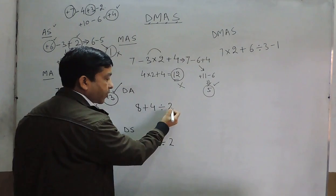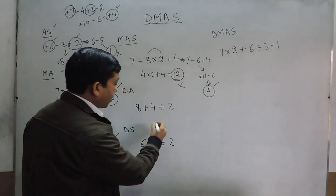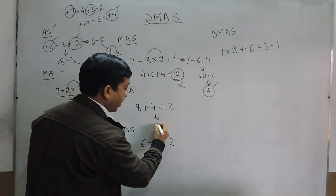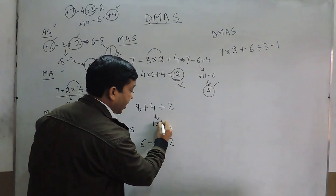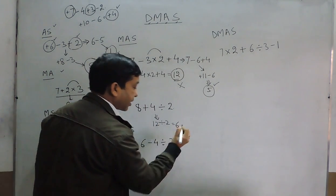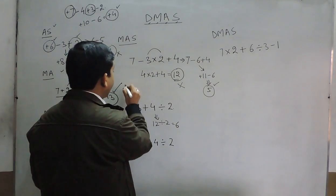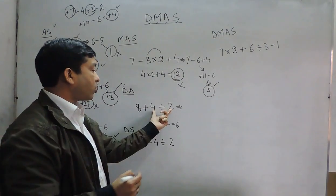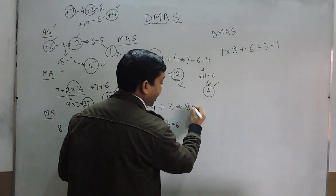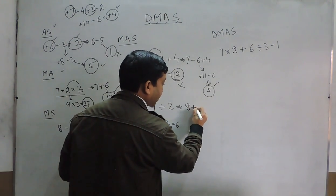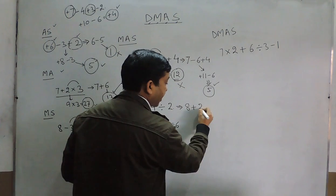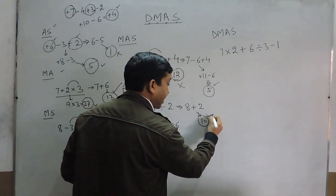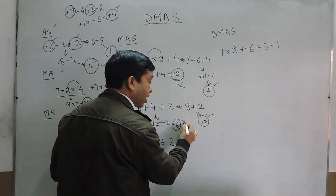For 8 plus 4 divided by 2, some students calculate 8 plus 4 equals 12, then 12 divided by 2 equals 6. But division must come before addition. The correct way is 8 plus the result of 4 divided by 2, which is 2, giving the correct answer of 10. So 10 is correct and 6 is wrong.